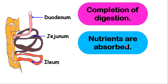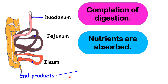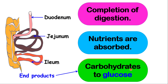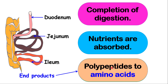Nutrients are also absorbed in the small intestine by finger-like structures known as villi. Since digestion ends in the small intestine, it is important to point out the end products of digestion. Fats break down into fatty acids and glycerol. Carbohydrates break down into glucose, which is a simple sugar. The end product of polypeptides or protein is amino acids.